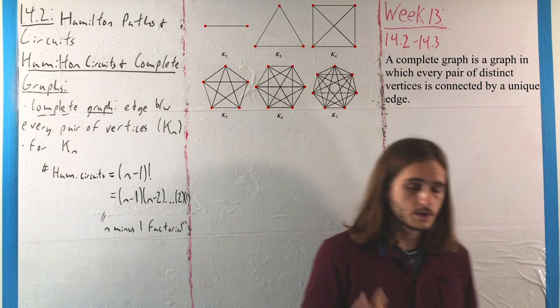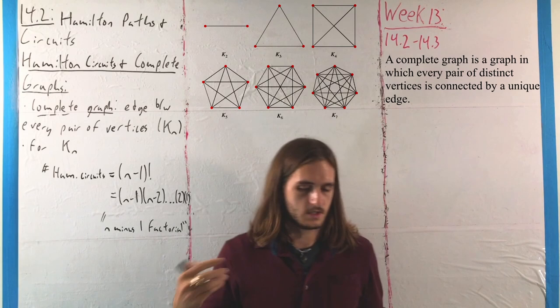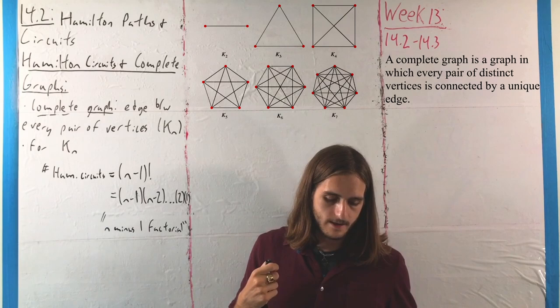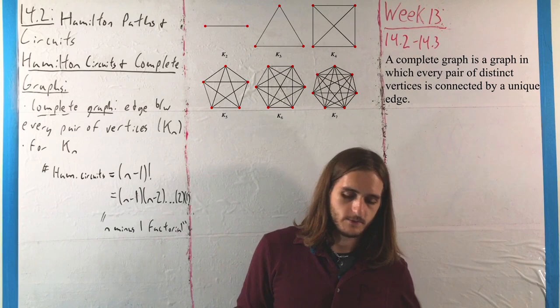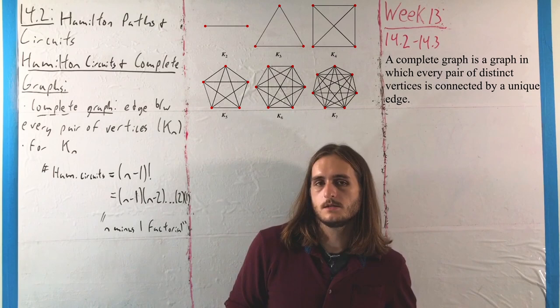So on two vertices we get K2, which is just two vertices with one edge. For three vertices, we get K3, which looks like a triangle with three vertices, two edges each. For K4, we have all of those collections there in that box for the diagonals. Then for K5 we get more, K6 we get more, K7 we get more and more.